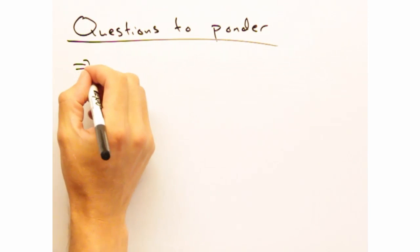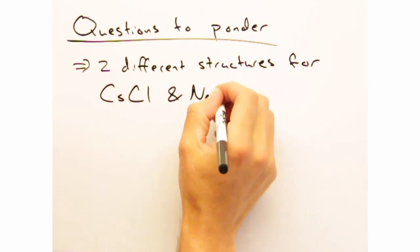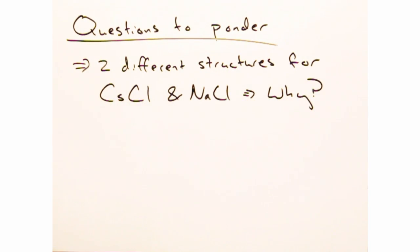We've talked before about cesium chloride and how it forms a body-centered cubic structure. Sodium chloride, on the other hand, forms another rock salt structure. So why does this happen?